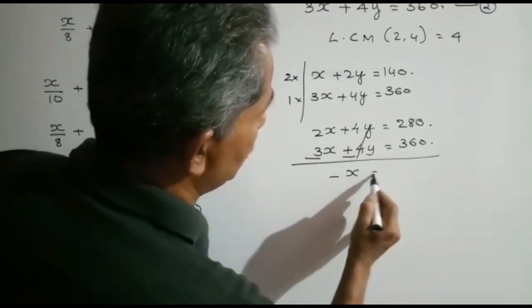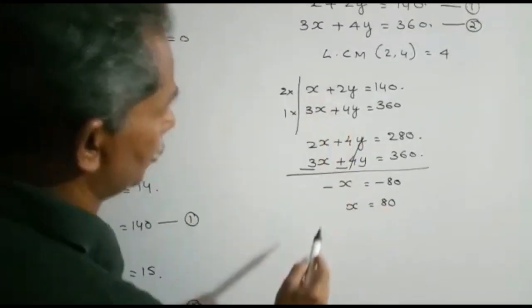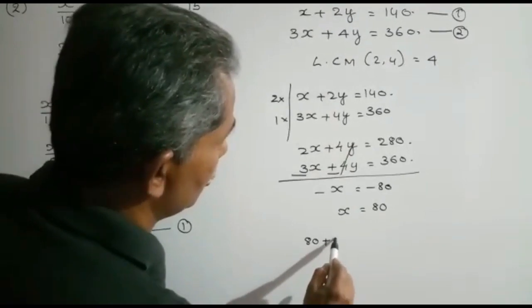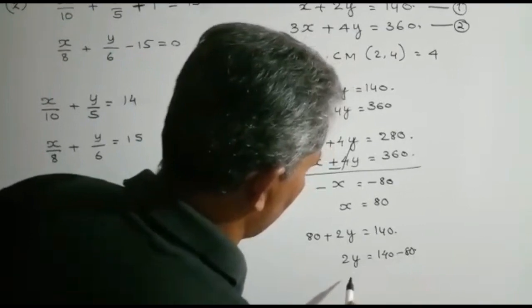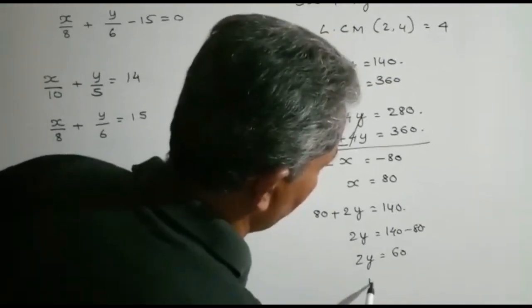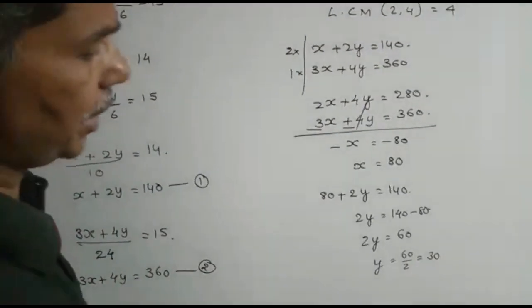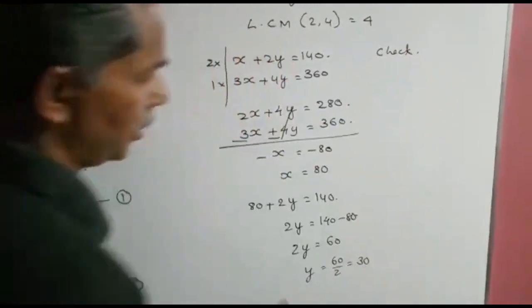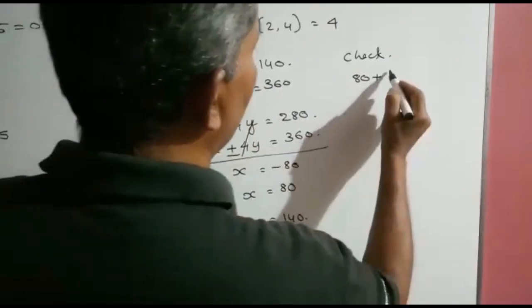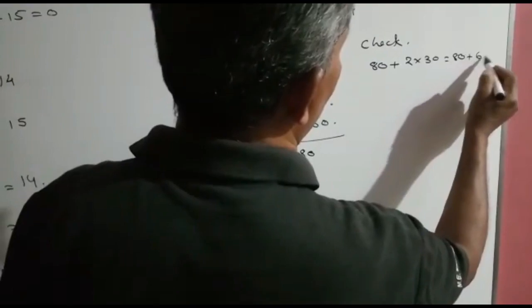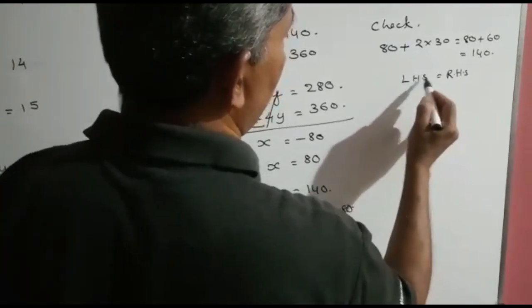Subtracting gives minus x equals minus 80, so x equals 80. Substituting x equals 80 into the first equation: 80 plus 2y equals 140, so 2y equals 60, giving y equals 30. Checking in equation 1: 80 plus 2 times 30 equals 80 plus 60 equals 140 — LHS equals RHS. Checking in equation 2: 3 times 80 plus 4 times 30 equals 240 plus 120 equals 360 — LHS equals RHS. Our solution is correct.